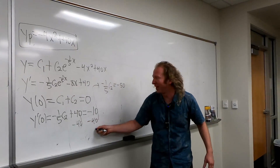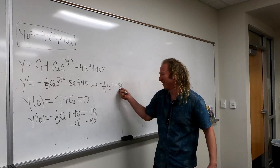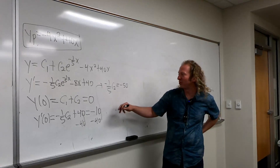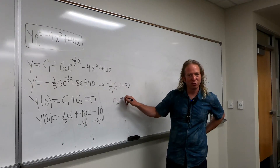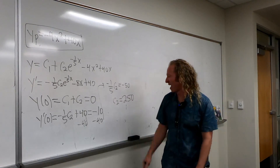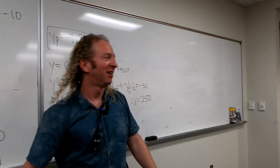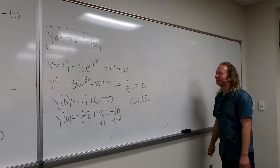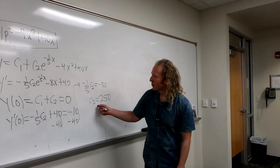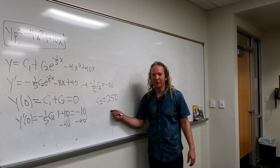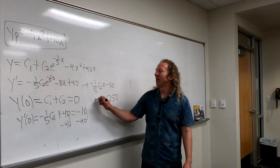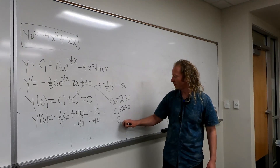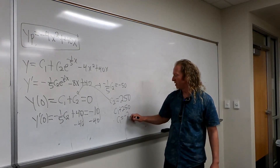Subtract 40 from both sides: negative 1/5 C2 equals negative 50, so C2 equals 250. Then C1 equals negative 250.